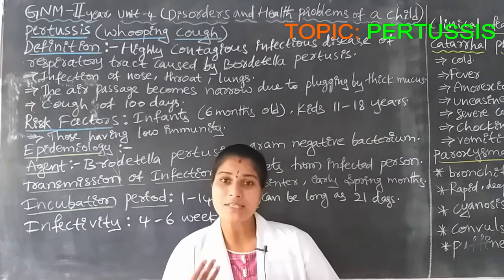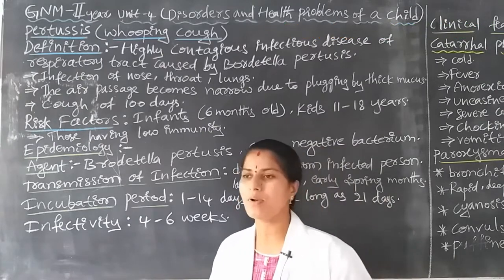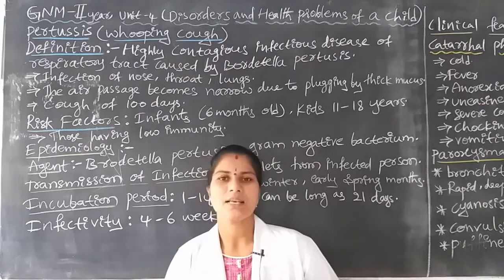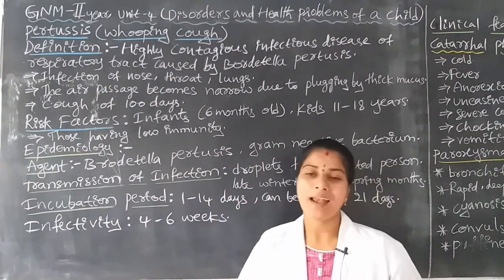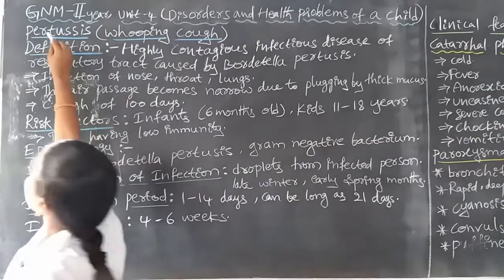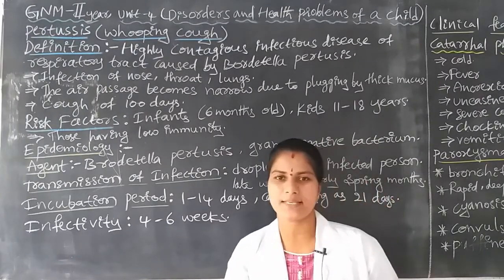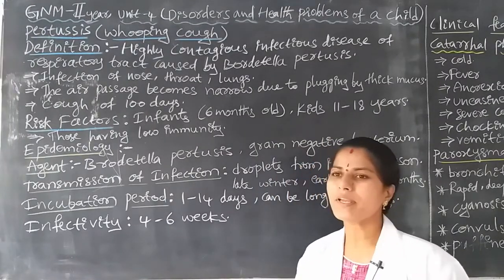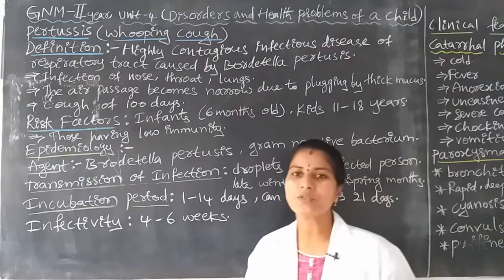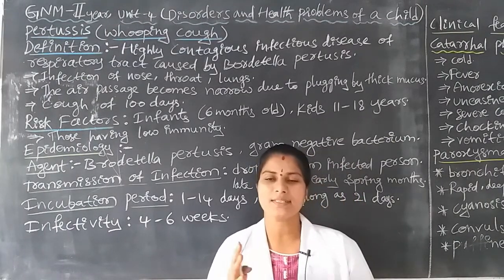What are the communicable diseases in childhood? Communicable diseases — for example, we have discussed in previous videos so many diseases: measles, diphtheria, and pertussis. Communicable disease is nothing but a disease that spreads from one person to another person easily, from one child to another child.